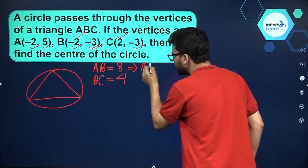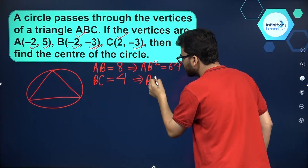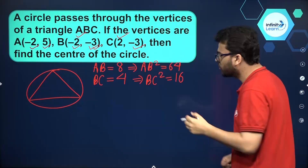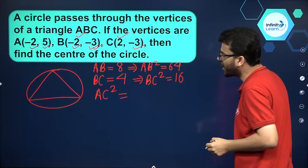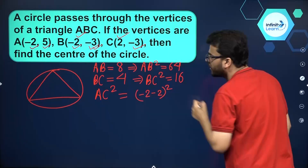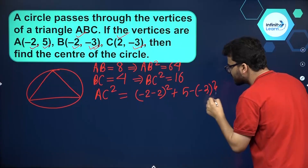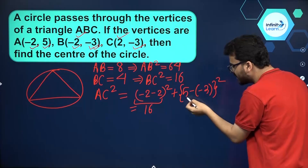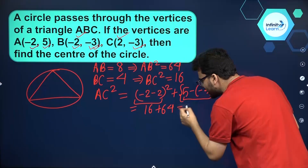So AB² = 64 and BC² = 16. Now to find AC, we use the distance formula: AC² = (−2 − 2)² + (5 − (−3))² = (−4)² + (8)² = 16 + 64 = 80.